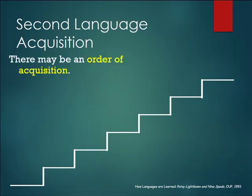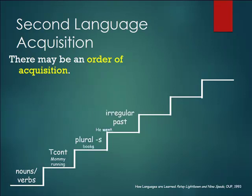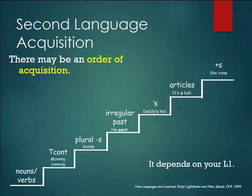There's been a lot of work on adults learning a second language and looking at an order of acquisition. This is quite controversial because, depending on the first language of the adult and the context in which they learn, this order might be changed. One famous second language acquisition theorist, Stephen Krashen, put together a set of theories — one of which is that there is a fixed order of acquisition — but that's not really accepted these days.